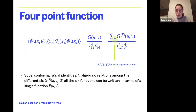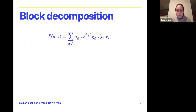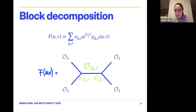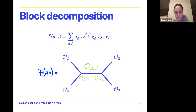We can do much more by using supersymmetry further. We decompose our function f(u,v) into conformal blocks: g_{delta,l} are the conformal blocks associated to primaries of dimension delta and spin l. There is a sum over delta and l, and the coefficient a is just the square of the three-point function coefficient.